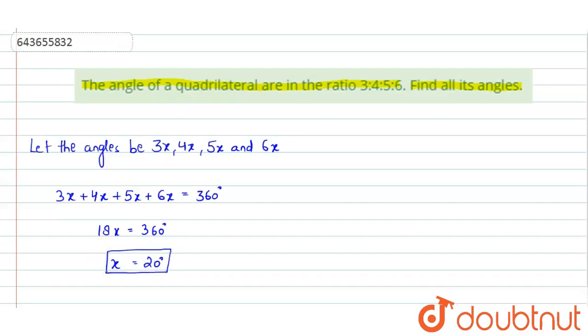Now we can write the values of all angles. 3x = 3 × 20 = 60 degrees. 4x = 4 × 20 = 80 degrees.